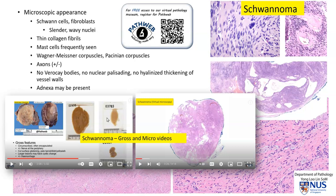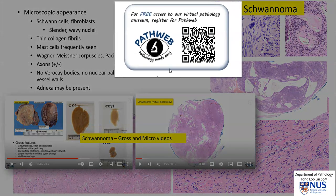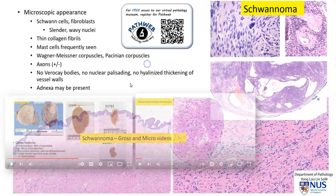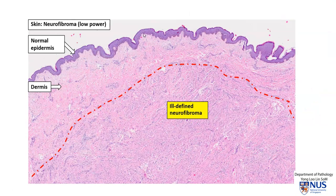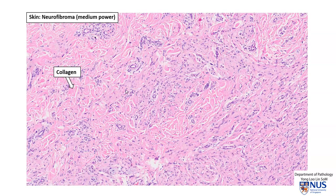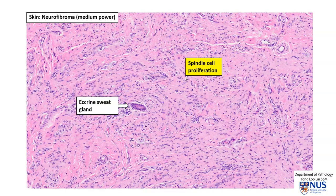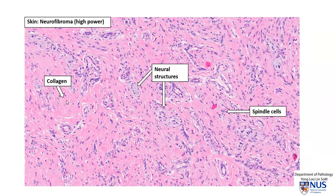There is a separate video for gross as well as microscopic features of schwannoma. These videos can be found on our Pathweb Teacher YouTube channel as well as our virtual online resource, Pathweb, which is free of charge — the registration link is in the video description. Here is an annotated microscopic picture showing a neurofibroma with the overlying epidermis, the dermis, and the region of the tumor, with collagen bundles, spindle cells, an entrapped eccrine sweat gland, and small neural structures.